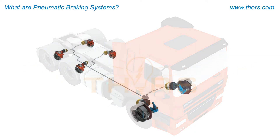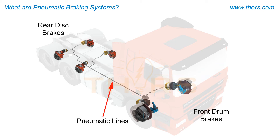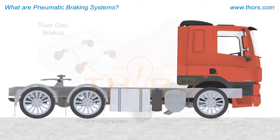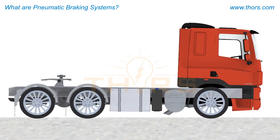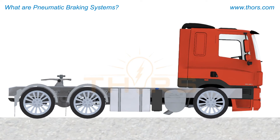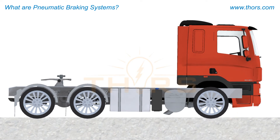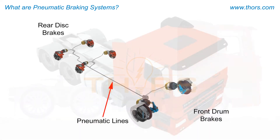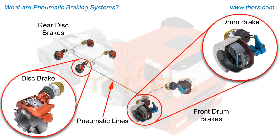A braking system is made up of several components that are designed to work together with the foundation brakes in order to decelerate or stop the motion of a vehicle. Foundation brakes, such as drum brakes or disc brakes, are the primary stopping devices at the wheels of a vehicle.